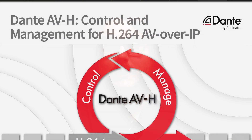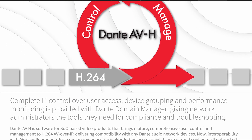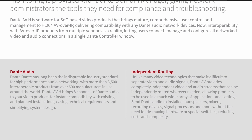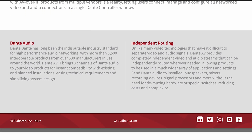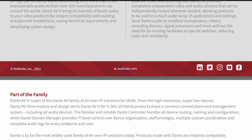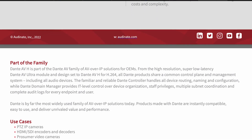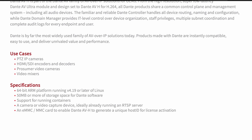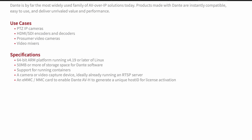Now that we have a decent idea of what Dante as a whole is, let's take a look at the version of Dante that we've announced support for with our award-winning Adamo. Dante AVH is the latest offering from Audinate regarding their Dante lineup, and it's focused around H.264 and H.265 codecs. Dante AVH will allow OEMs to break into the Dante ecosystem using their existing H.264 and H.265 solutions in a cost-effective manner through software.